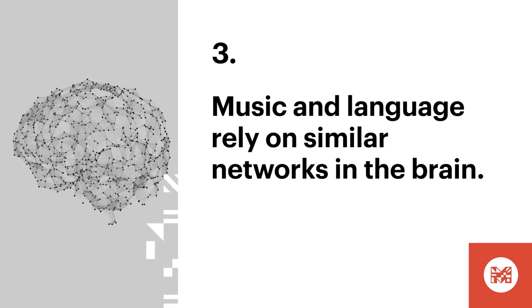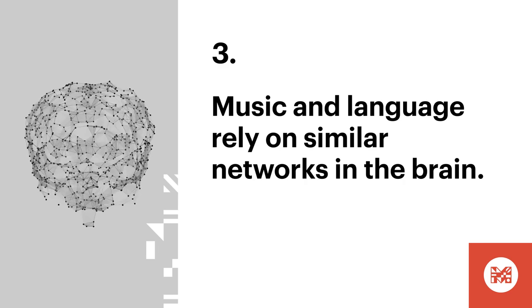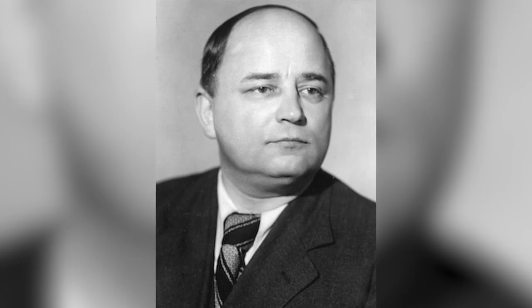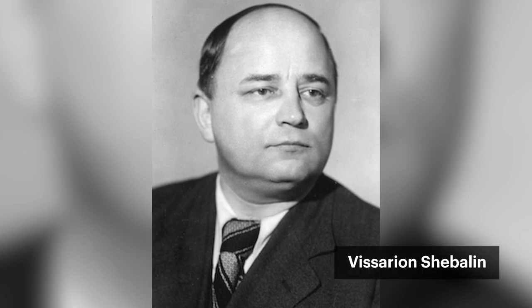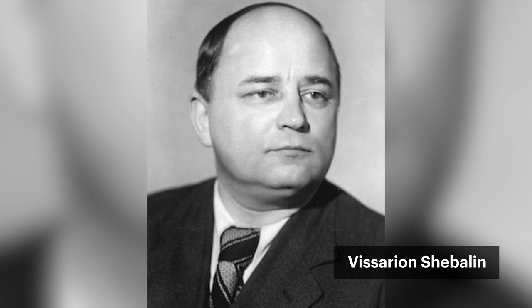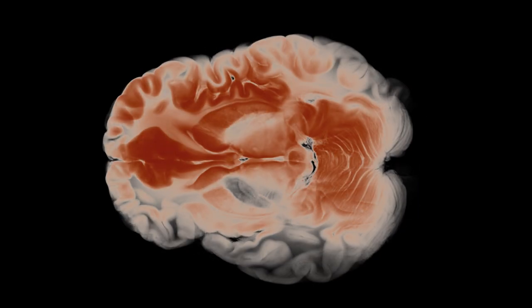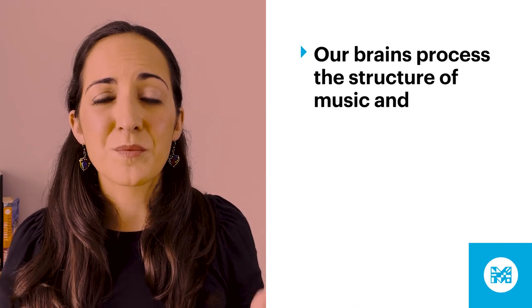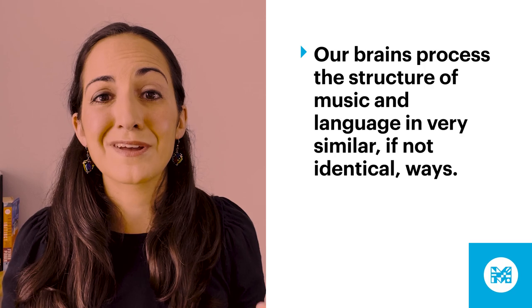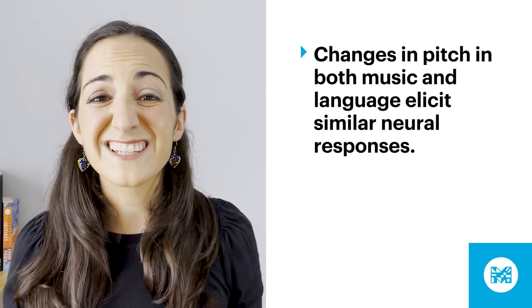Number three: music and language rely on similar networks in the brain. We know that at least to some extent, music and language are stored separately in the brain. People can suffer brain damage like from a stroke and lose language abilities, but still retain their musical skills, or vice versa. One famous example is the Russian composer Vissarion Shebolin, who had severe language impairments following multiple strokes, but retained his musical talent and went on to publish several impressive musical compositions. However, modern brain imaging techniques have shown us that in spite of these differences, there's actually a lot of overlap in how and where music and language are processed in the brain. Studies have shown that our brains process the structure of music and language in very similar, if not identical, ways. Changes in pitch in both music and language also elicit similar neural responses.